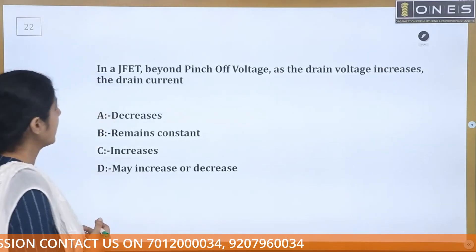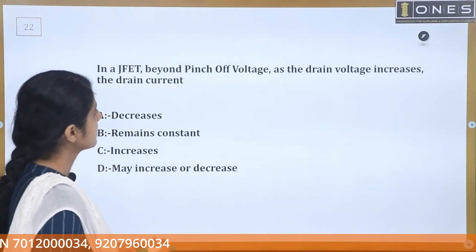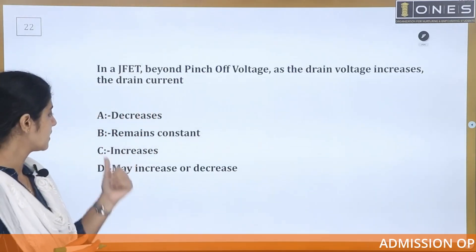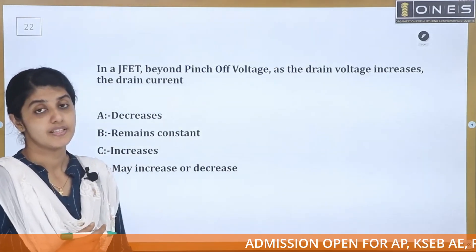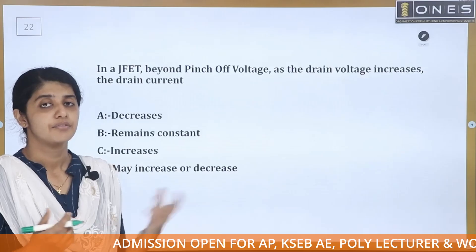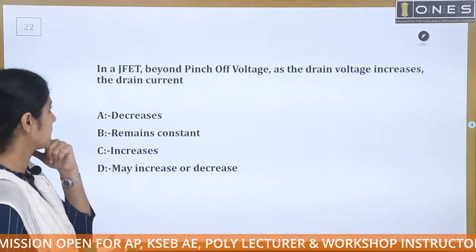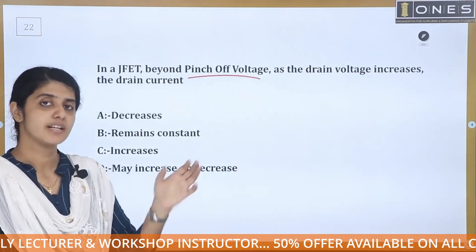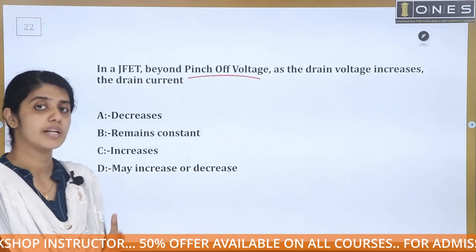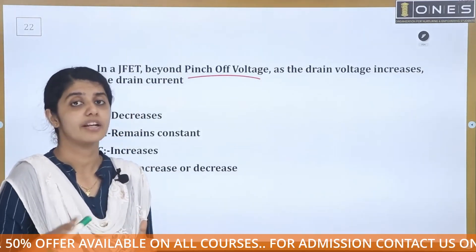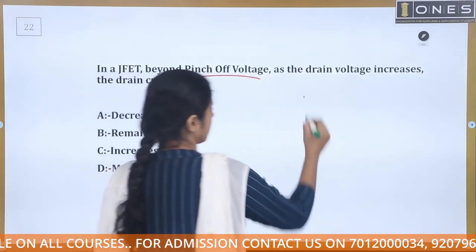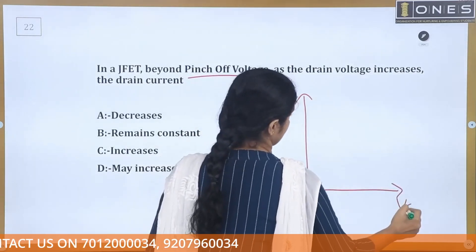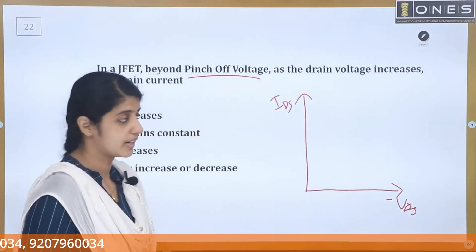In a JFET, beyond the pinch-off voltage, as the drain voltage increases, the drain current remains constant. We will examine the JFET's Ids vs Vds graph to understand how current varies with voltage in this device.